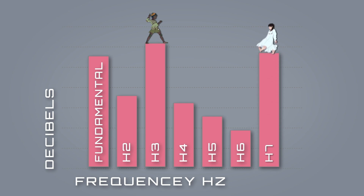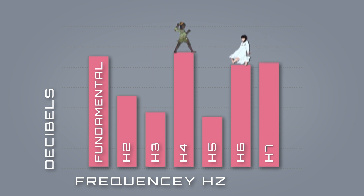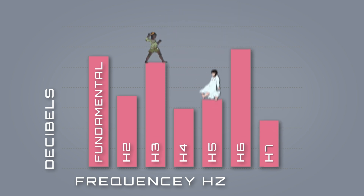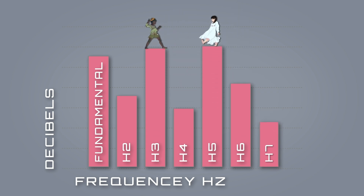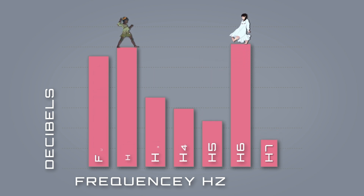The columns they are landing on are basically the harmonics in the pitch we are singing. By boosting one harmonic over another, they are changing the quality of the sound.